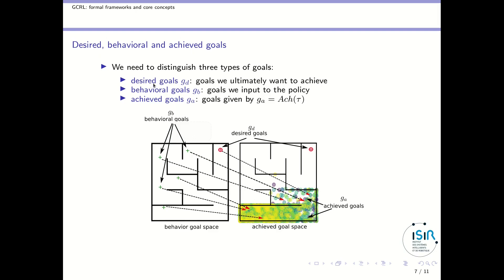Another set of core concepts important in goal-conditioned RL is the difference between desired, behavioral, and achieved goals. Desired goals, noted GD, are the goals we ultimately want to achieve. For instance in a maze, your desired goal could be a particular target location. But it may not be feasible to learn a policy to reach this goal immediately, so you condition your policy on what we call a behavioral goal, which can be intermediate — first reach this, then this, etc. — and you expand behavioral goals towards desired goals. Finally, the achieved goal is often not the goal on which the policy was conditioned; it equals the behavioral goal only if the policy is successful.